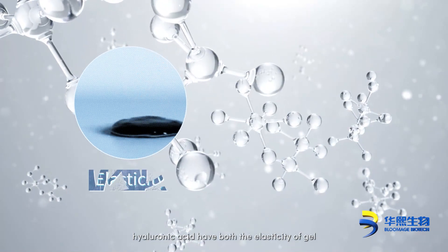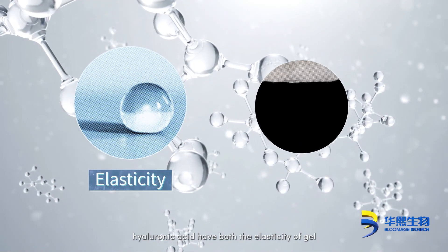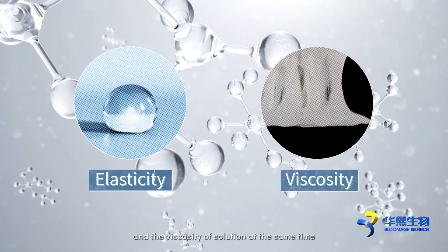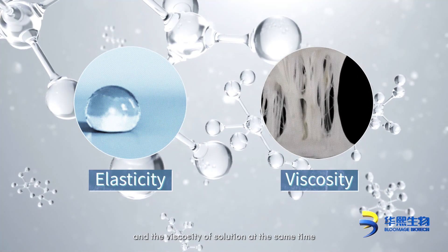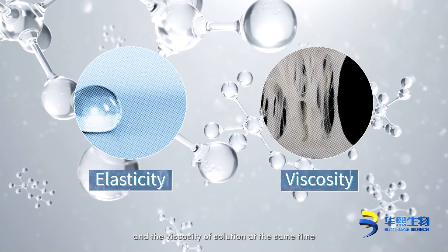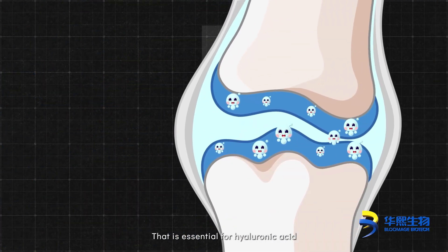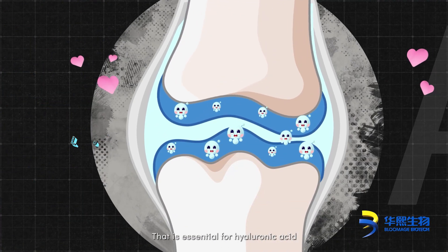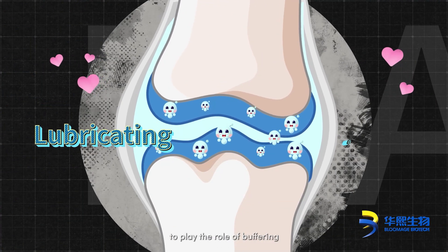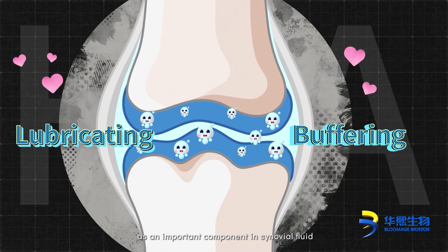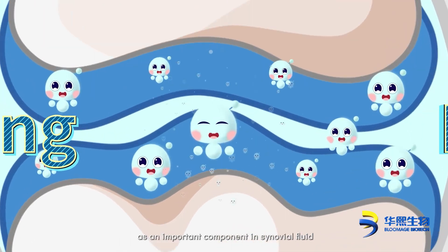Viscoelasticity: Hyaluronic acid has both the elasticity of gel and the viscosity of solution at the same time. That is essential for Hyaluronic acid to play the role of buffering as an important component of synovial fluid.